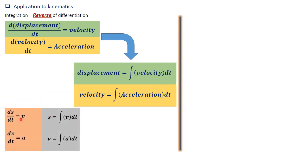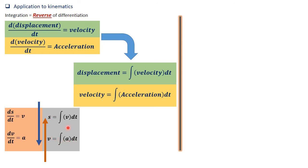Looking at this table: differentiating displacement with respect to time gives velocity; differentiating velocity with respect to time gives acceleration. Integration of velocity gives displacement, and integration of acceleration gives velocity. Going down means repetitive differentiation — first to get velocity, then acceleration. Going upwards means repetitive integration — first integrating acceleration to get velocity, then integrating velocity to get displacement.